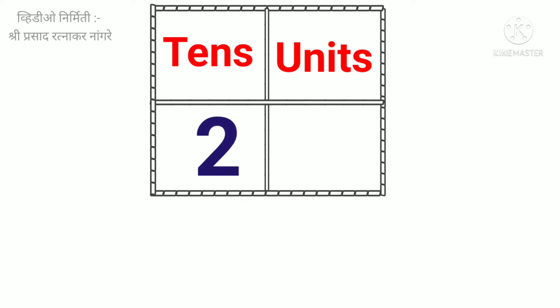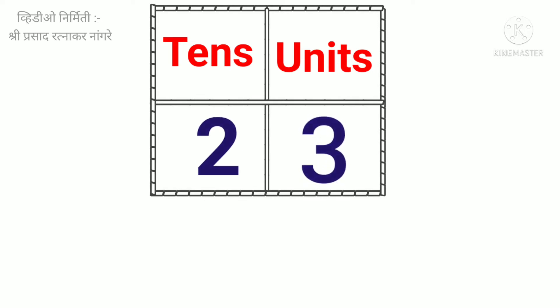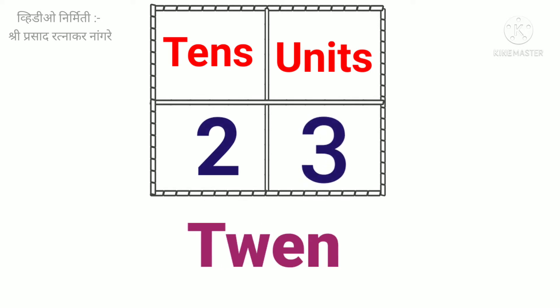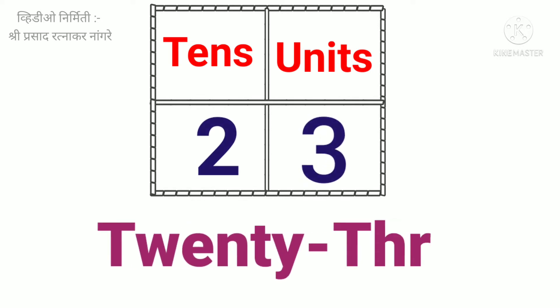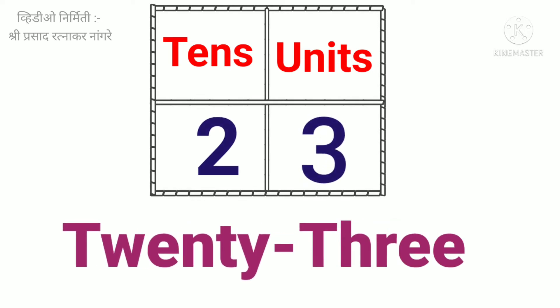Two tens. Three units. Twenty-three. T-W-E-N-T-Y-T-H-R-E-E. Twenty-three.